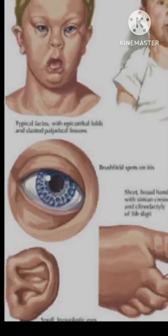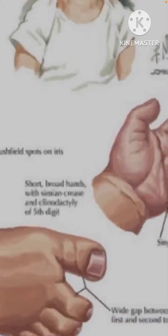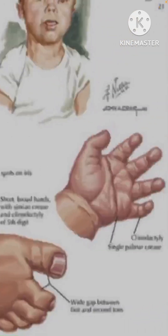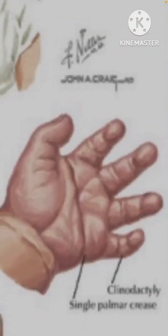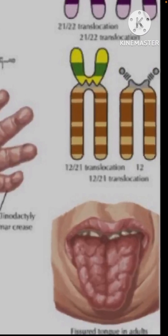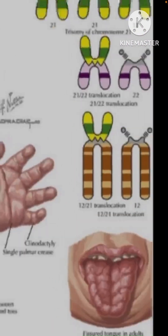Brushfield spots are not often seen. There is also the wide sandal gap, or wide separation of the toes, the single palmar crease where the middle crease is single rather than double, and the bent little finger called clinodactyly. The tongue may also be furrowed, though this is more commonly seen in adults rather than in babies.